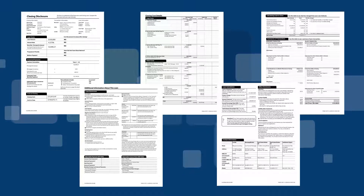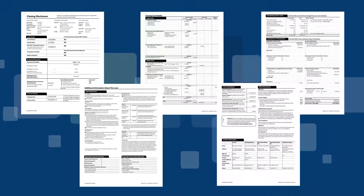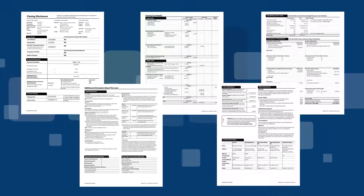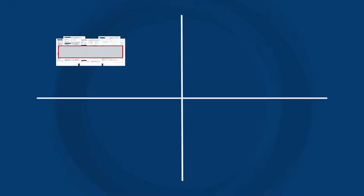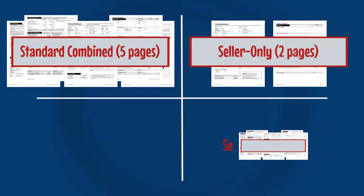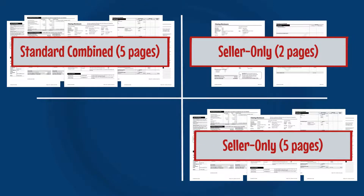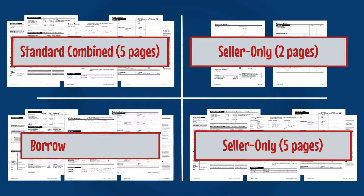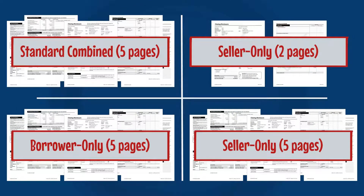The standard CD is five pages, which includes details for both the buyer and seller. Variations of the CD, like a two- or a five-page seller-only closing disclosure or a five-page borrower-only CD, may be prepared and delivered depending on the situation.